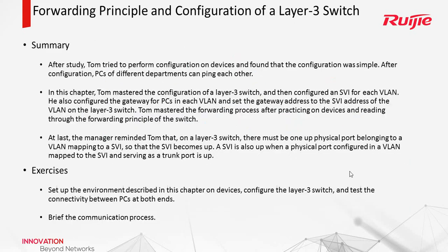Now let us have a summary. Today we learned the forwarding principle and the configuration of a layer 3 switch. We know the layer 3 switch can help us forward packets between different VLANs. We also learned the interface VLAN — its name is SVI — and it is like the gateway of the VLAN. I also reviewed several exercises here; please read and answer them. Thank you for watching this video. See you next time.